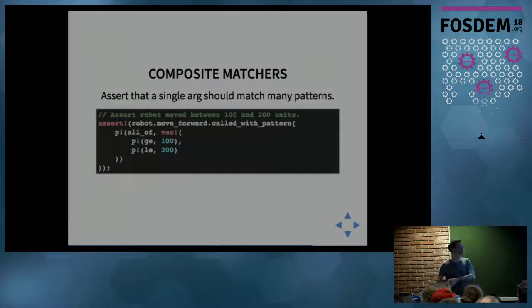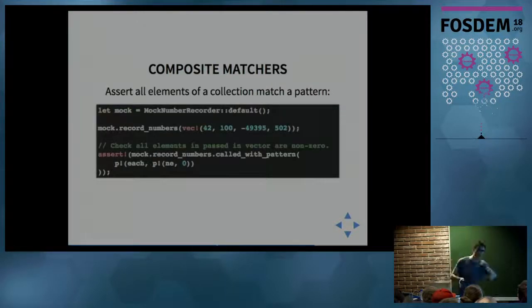This is a particularly useful feature - do matching across individual elements in a collection. For any iterable object, you can use this each matcher. Here we have some mock that records numbers. It takes a vector of integers and you want to assert that this mock was called with a vector where each element matched to this pattern, which is not equal to zero. You can also define custom matchers.